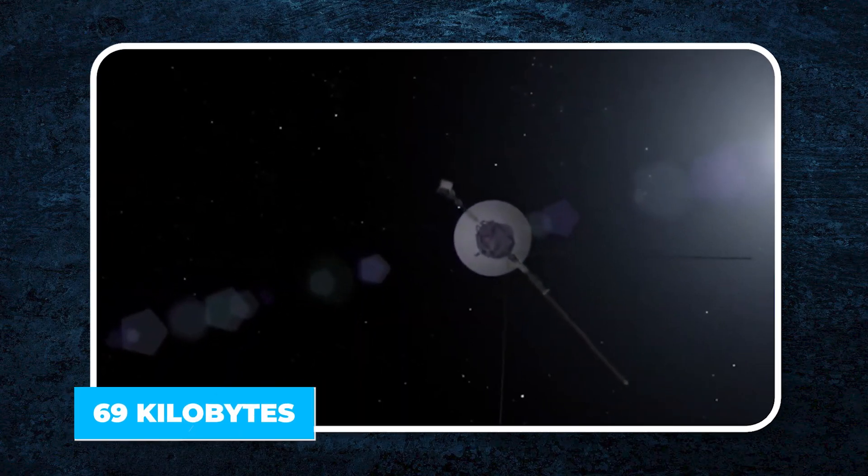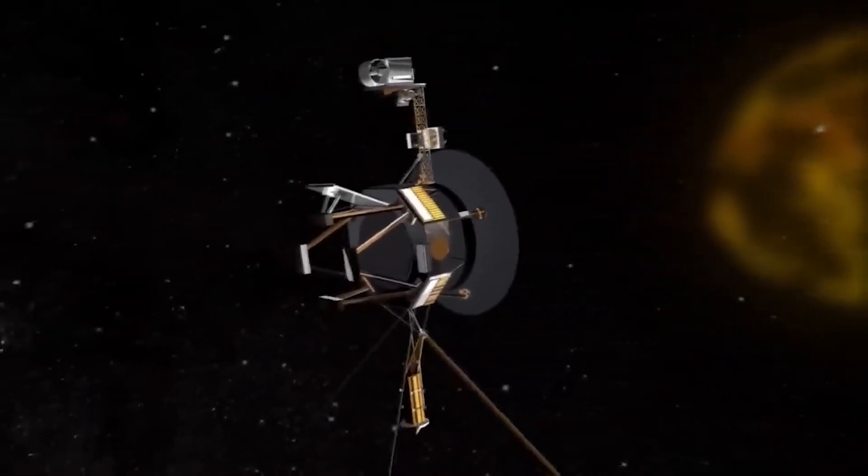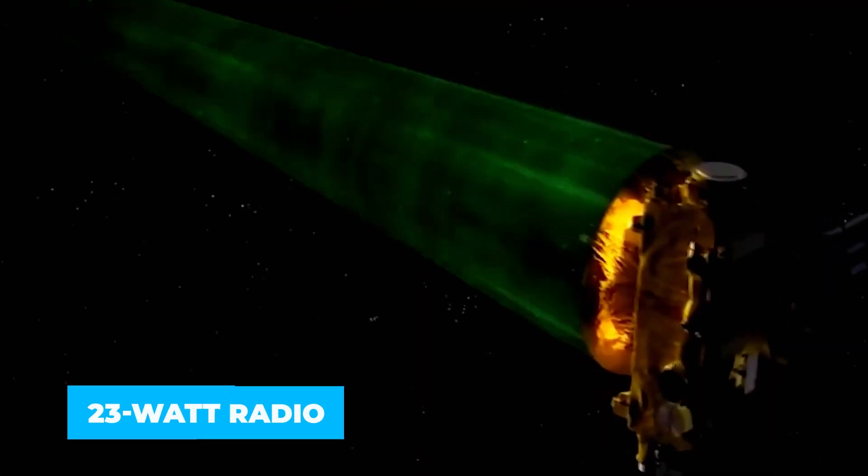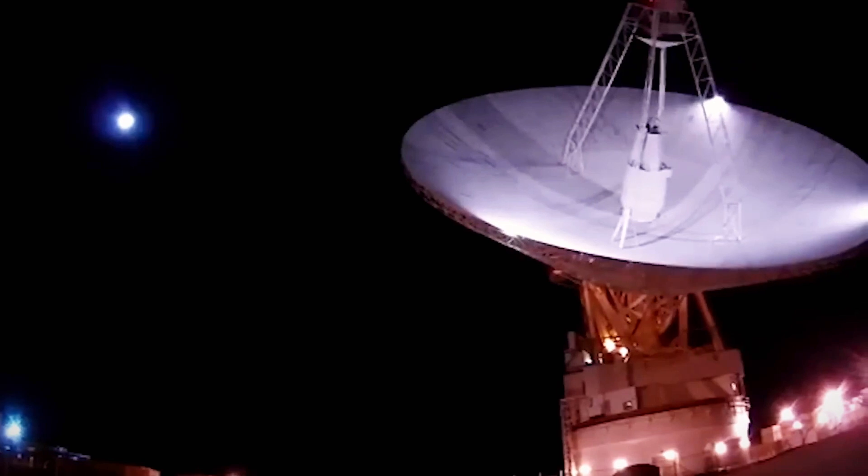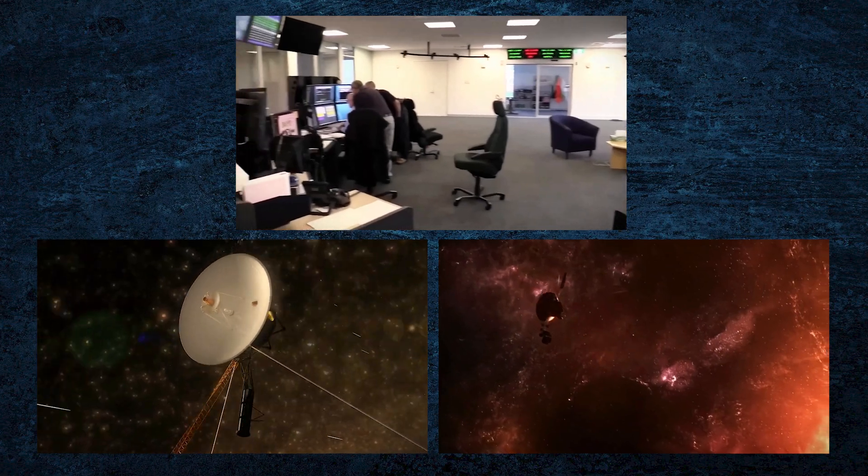The crazy part? This thing has a memory of just 69 kilobytes. That's less than what a phone uses to send a single text message, and yet it's out there holding onto secrets about deep space. It transmits signals using a weak 23-watt radio, which is about the same as the light bulb in a fridge. But even with all its limits, Voyager 1 has managed to keep in touch with Earth.